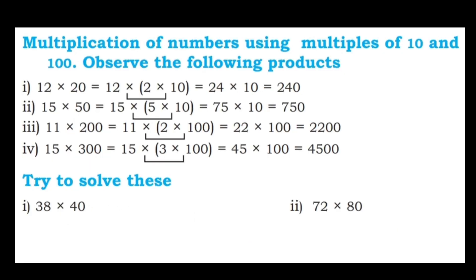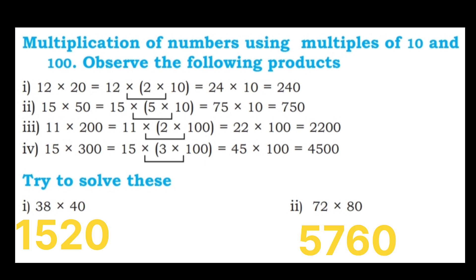Multiplication of numbers using multiples of 10 and 100. Observe the following products. 12 into 20: first multiply 12 by 2, then append one zero. 12 twos are 24, so 240. 15 into 50: 15 fives are 75, append one zero, so 750. 11 into 200: 11 twos are 22, append two zeros, so 2200. 15 into 300: 15 threes are 45, append two zeros, so 4500.